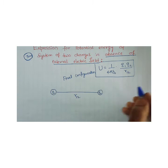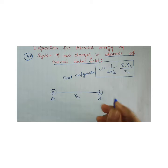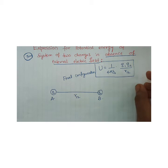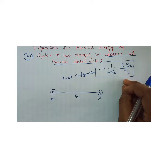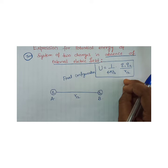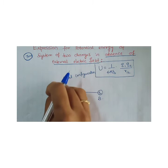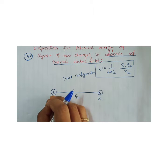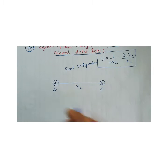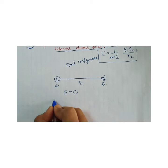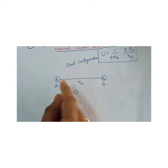How have we brought Q1 to position A? Assume position A and position B. From infinity, Q1 is brought by doing some work — by applying external force. That work done is conservative in nature, meaning the work done will not depend upon the path; it depends only on the initial and final points. So from infinity you are bringing Q1 by doing some work, and that work done we will consider as W1. Since your electric field is absent — electric field is zero — the initial work done W1 will be zero.